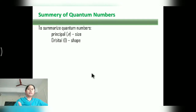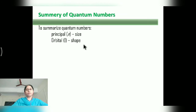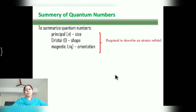Let us summarize: the Principal Quantum Number defines the size of the orbital; the Orbital Quantum Number defines the shape of the orbital; the Magnetic Quantum Number represents the orientation of the electron in the orbit. These three are required to describe the atomic orbital.